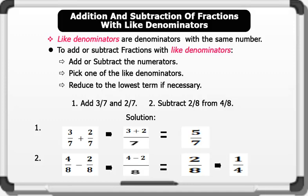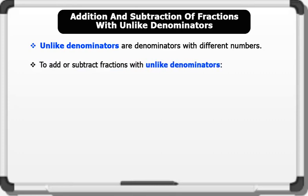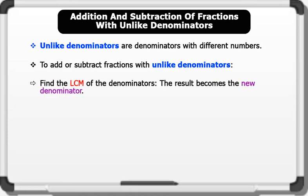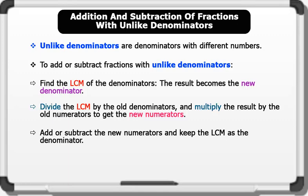Now let's see the addition and subtraction of fractions with unlike denominators. Unlike denominators are denominators with different numbers. To add or subtract fractions with unlike denominators, we first find the LCM of the denominators — the result becomes the new denominator. Then we divide the LCM by the old denominators and multiply the result by the old numerators to get the new numerators. We add or subtract the new numerators and keep the LCM as the denominator.